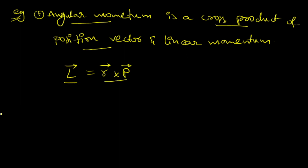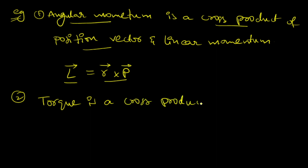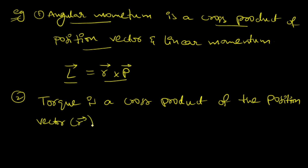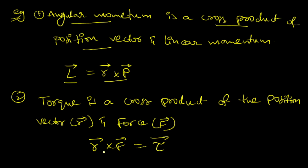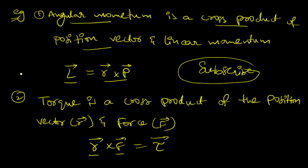The second example: torque is a cross product of the position vector r-bar and force F-bar. Since force is a vector and position vector is also a vector, r-bar cross F-bar gives you the torque, denoted by tau. Torque is a vector. These are the examples of vector products, and here I will end the lecture. Please subscribe and share.